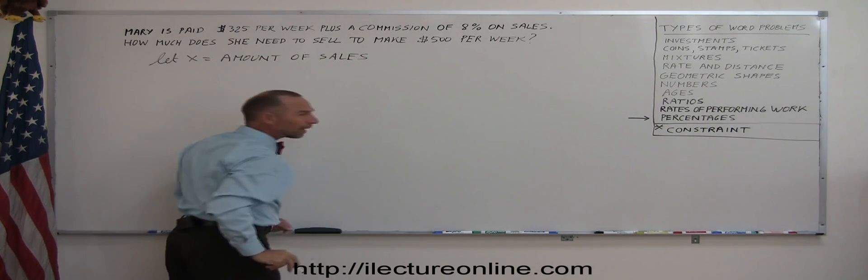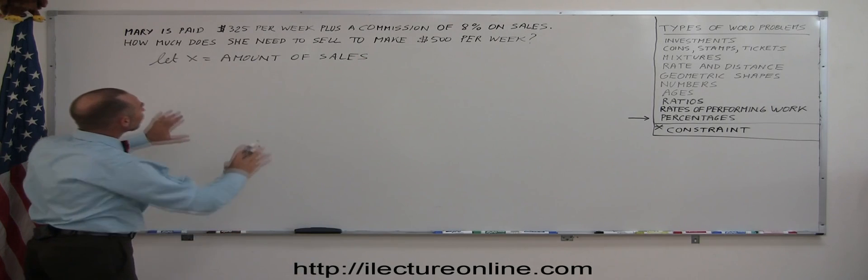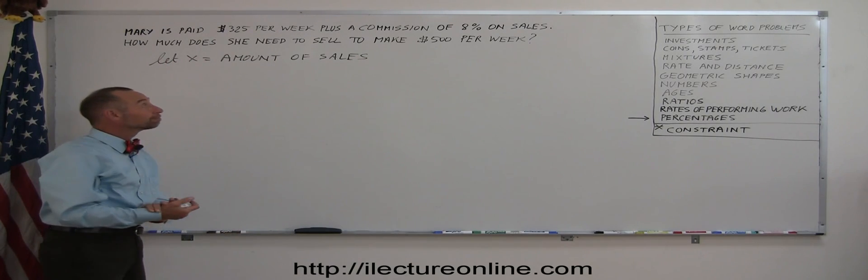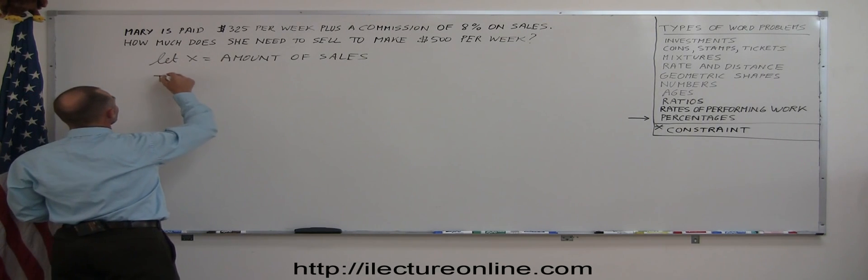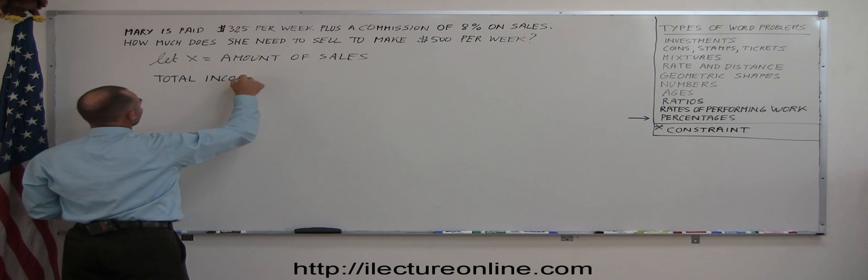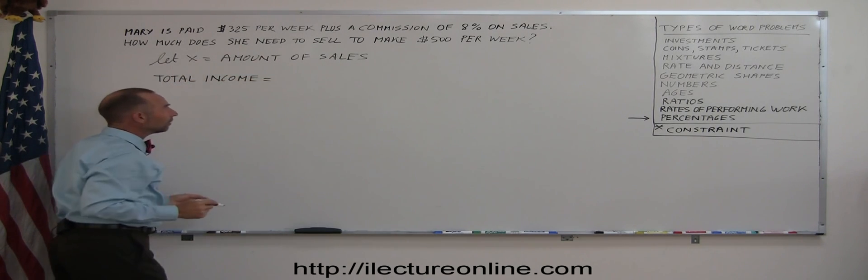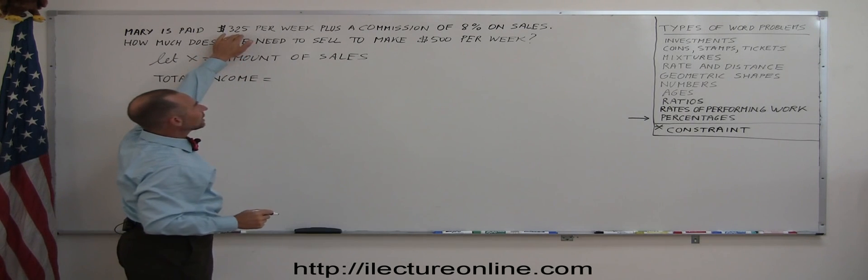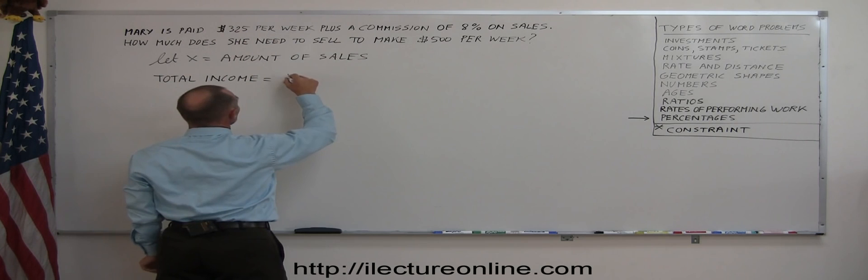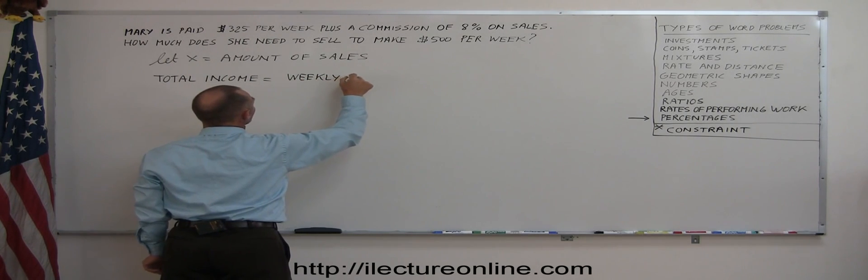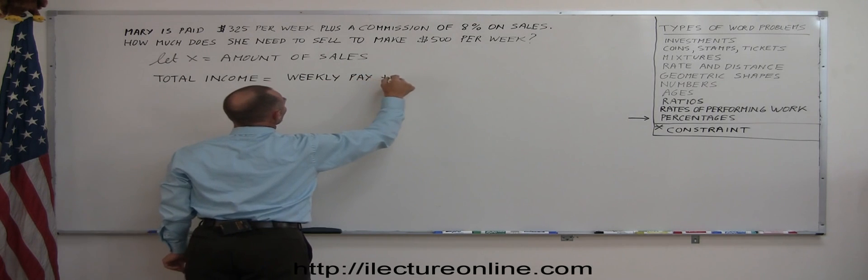Now we need an equation to describe mathematically what's written in those sentences. The total amount that she makes, so total income, is the sum of her weekly pay plus how much she makes in commission. So that would be weekly pay plus commission.